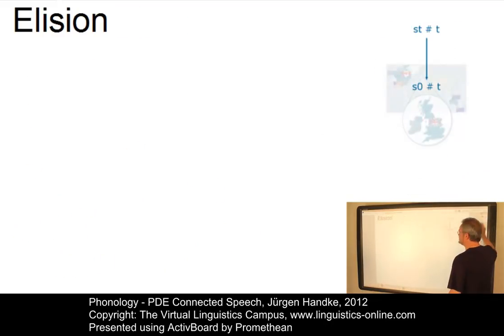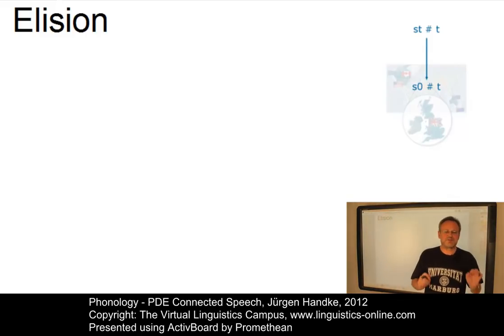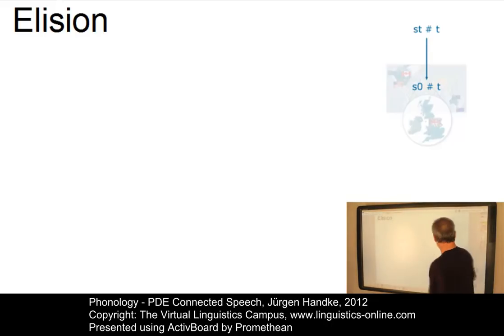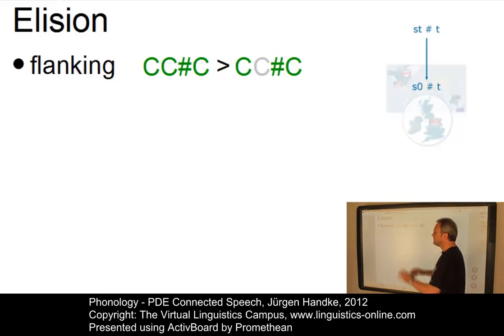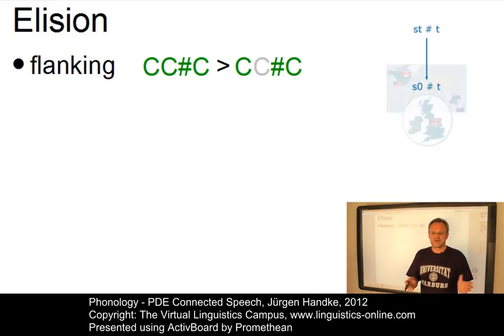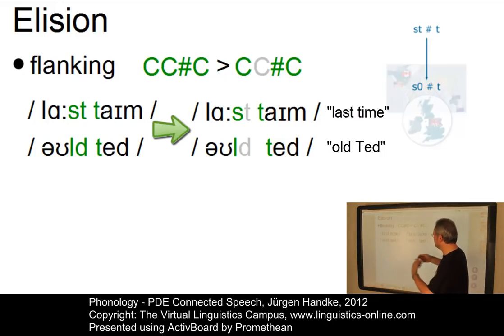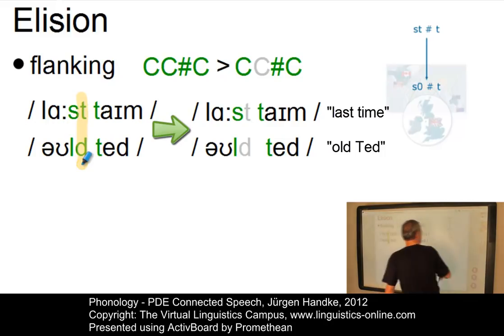Let's look at elision next. Elision is the phonological process in which a phoneme that is present in the citation form — that is, in isolation — is deleted under the influence of the context. In most cases, elision occurs as flanking elision, where the position of the elided phoneme is at the edge of a word. Flanking elision primarily affects alveolar plosive consonants, as in 'last time', which becomes 'last time', or 'old Ted', which becomes 'old Ted'. In both constructions, the final plosive of the initial item is deleted or elided.